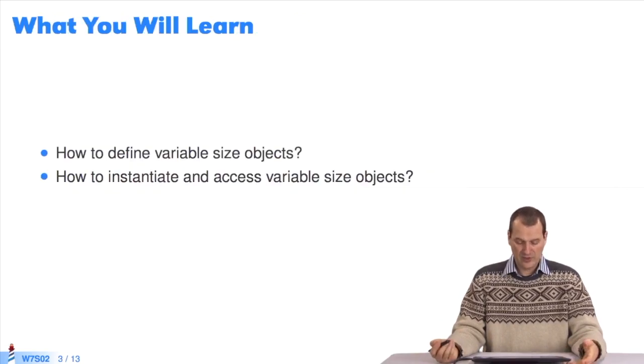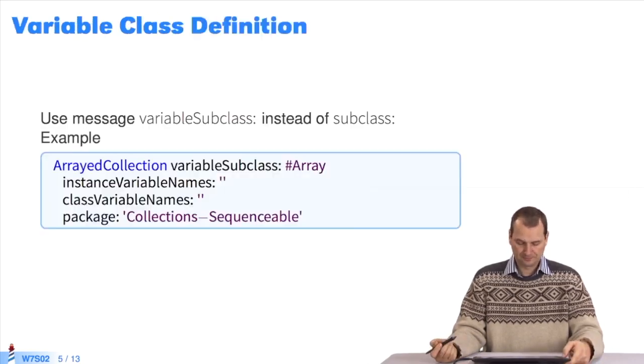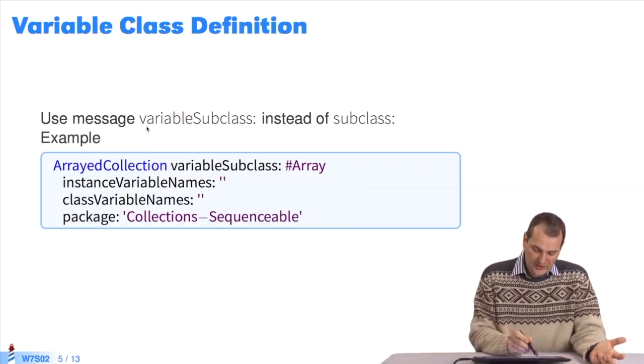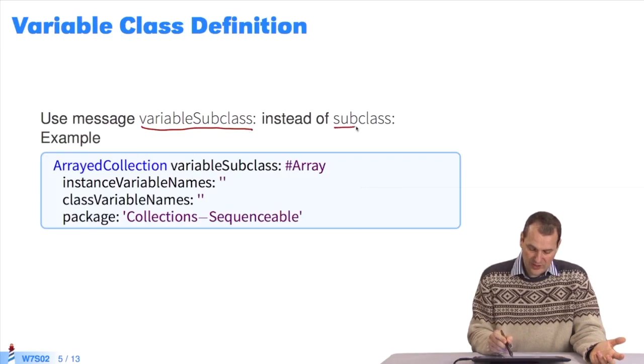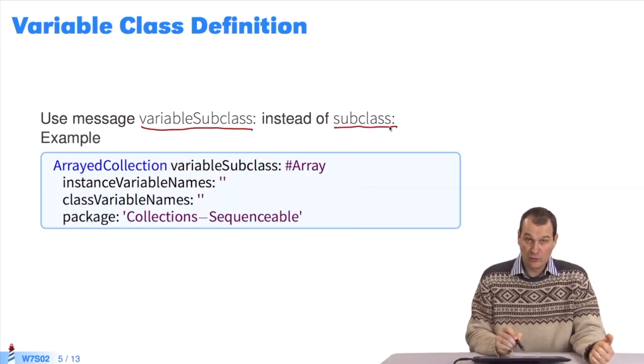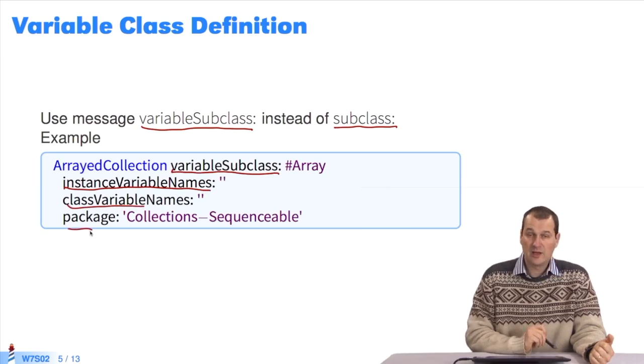So, here we'll show you how to define classes with variable size instances, how to instantiate these objects, and how to access these variable sizes. Now for the first point. It's very simple. The definition uses the message variableSubclass instead of subclass. We copy the array class definition. Note that we use variableSubclass, instanceVariableNames, and so on to create the class.